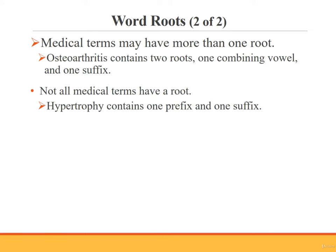Some medical terms, such as osteoarthritis, may have more than one word root. Oste and arthra are the word roots in this term. There is also a combining vowel O and the suffix itis. Not every medical term has a word root, however. For example, hyper is a prefix that means excessive, and trophy is a suffix that means development. These two word parts can be combined to make the term hypertrophy, which means excessive development.